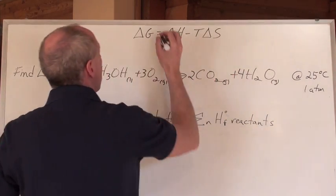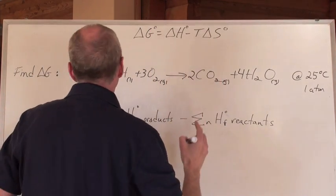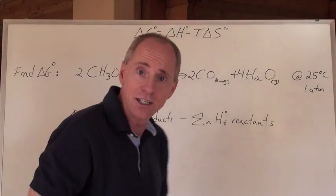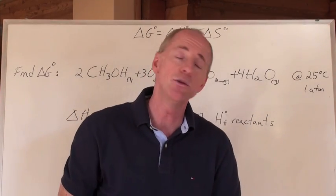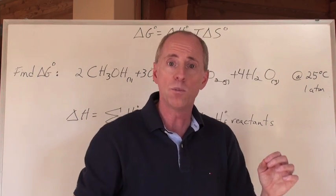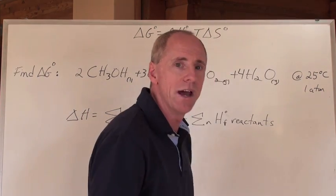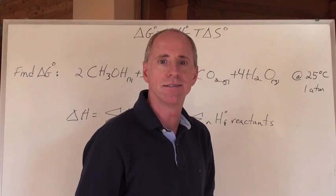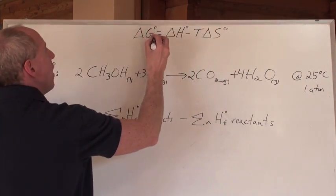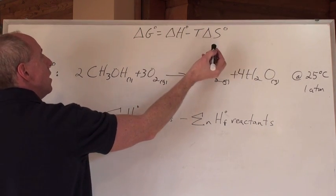That means all values can be given the 'knot' symbol — meaning standard conditions. So the appropriate question is: find delta G knot. 'Knot' means standard conditions, not 'nought' — nought in England means zero, like being tied at nought in a football match. So we're finding the delta G value under standard conditions.